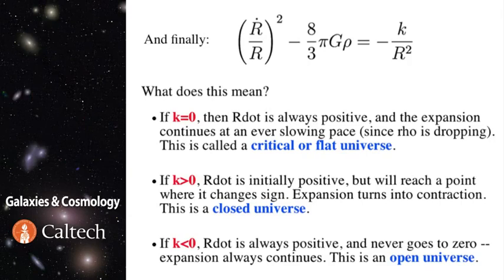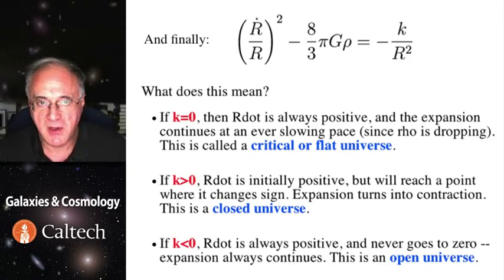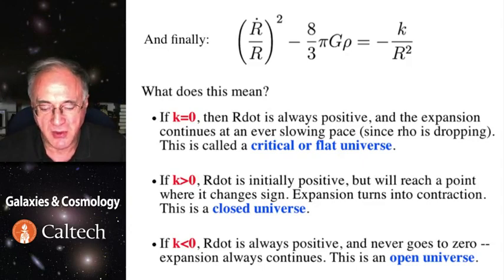And if curvature constant is less than zero, then r dot must be always positive. It's never zero, and the universe expands forever. So that's the open universe.